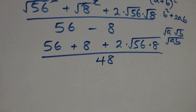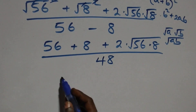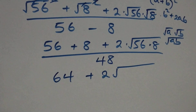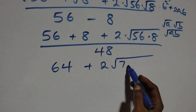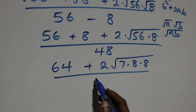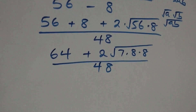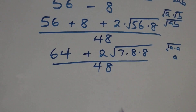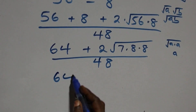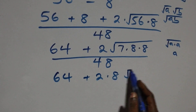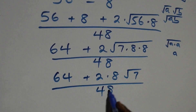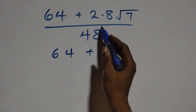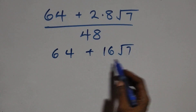Continuing: fifty-six plus eight gives sixty-four. The cross term becomes two times root of seven times eight times eight. Since root eight times eight equals eight, we have two times eight times root seven, which is sixteen root seven. So we have sixty-four plus sixteen root seven over forty-eight.